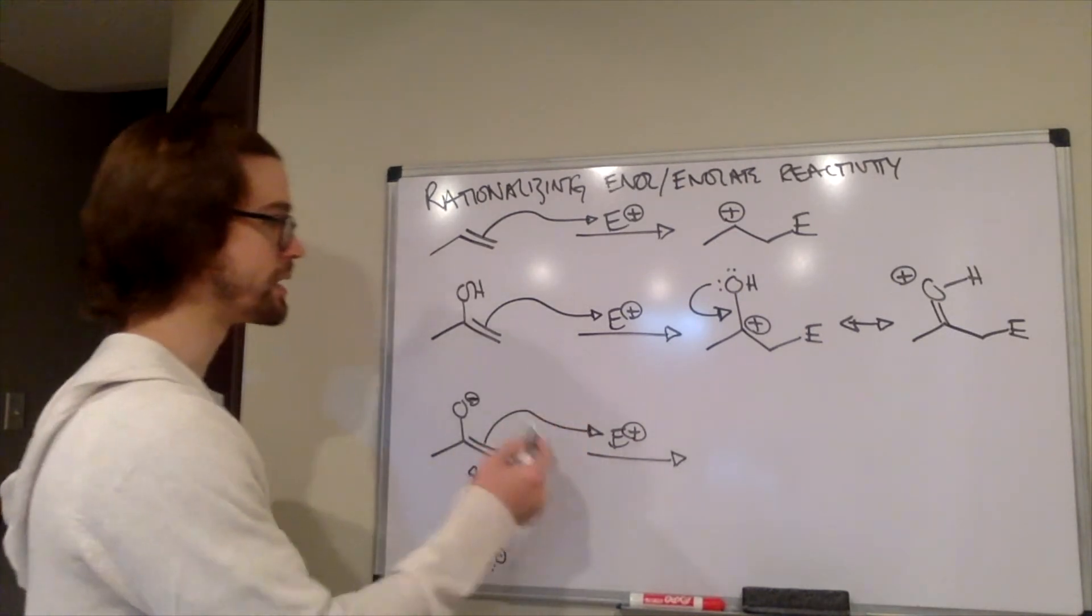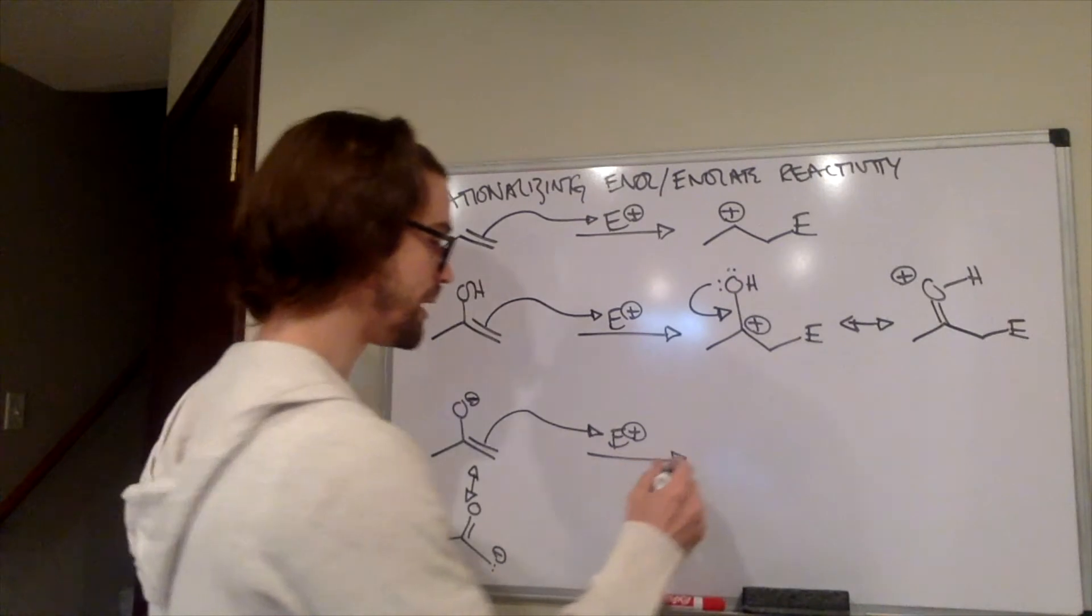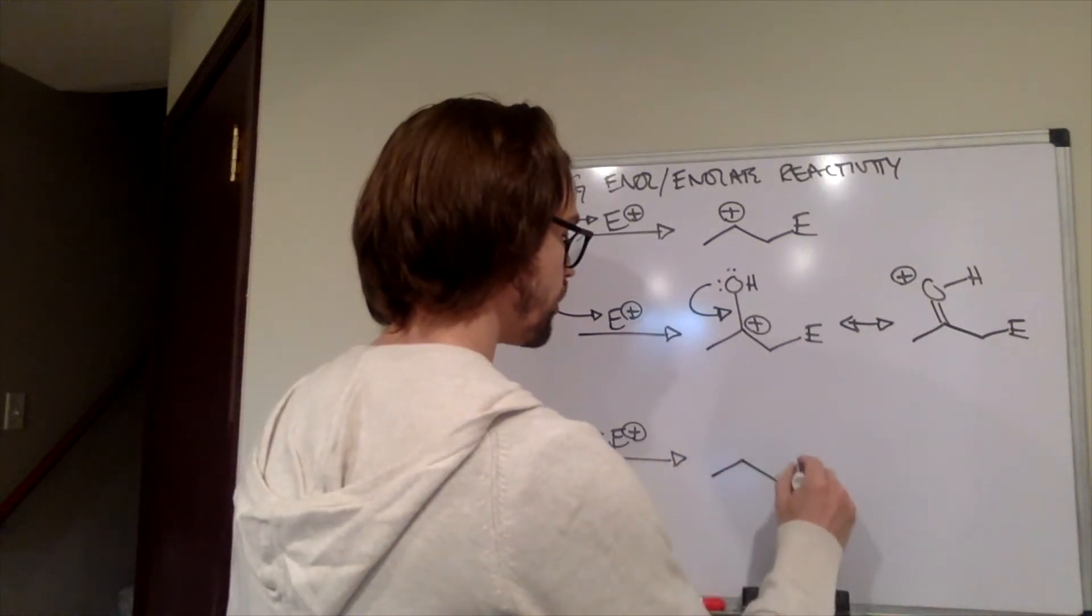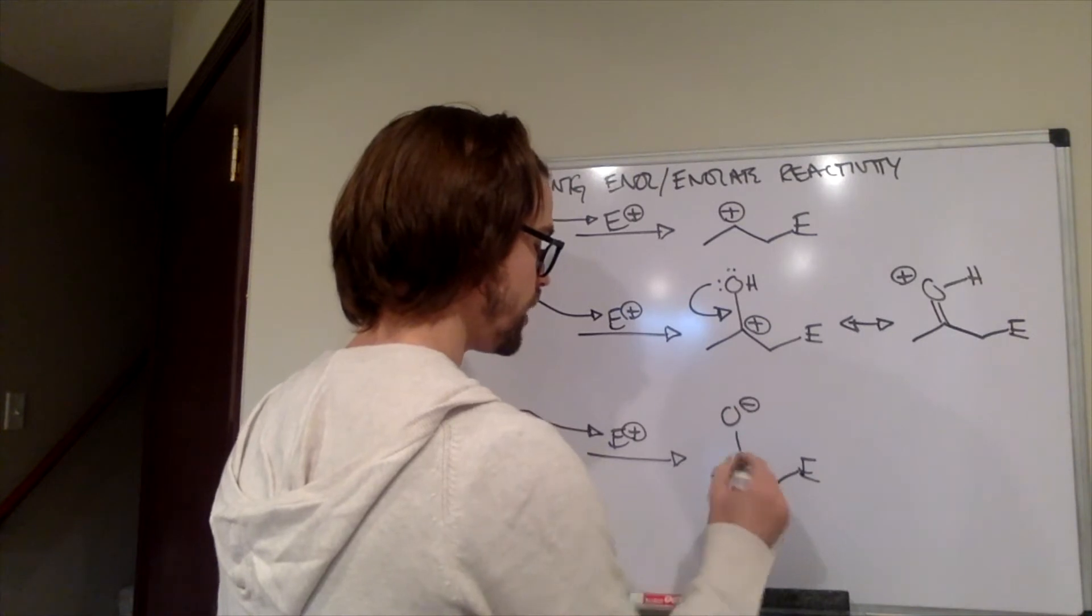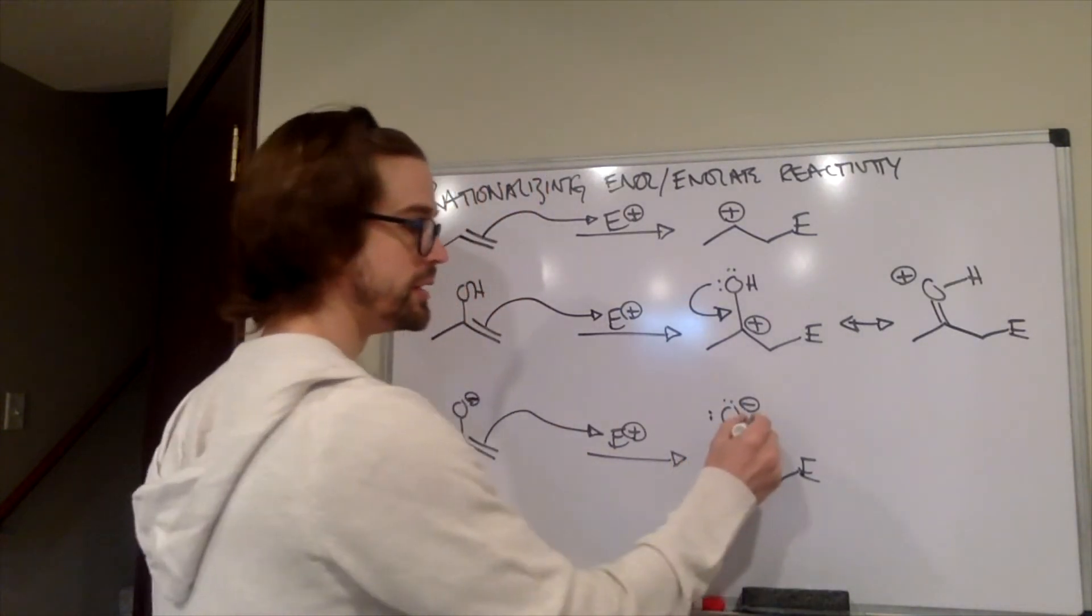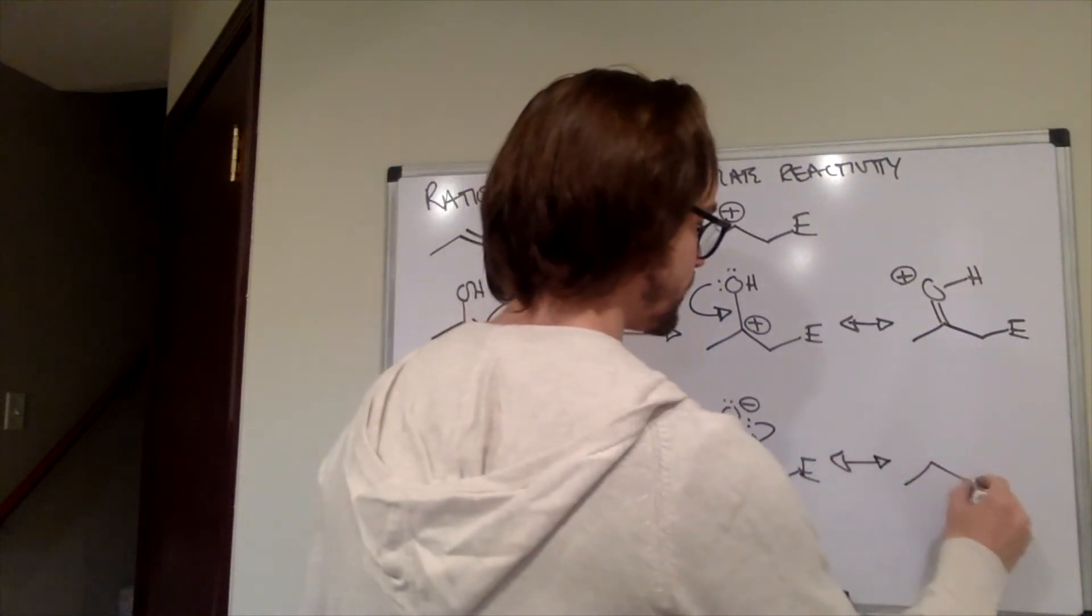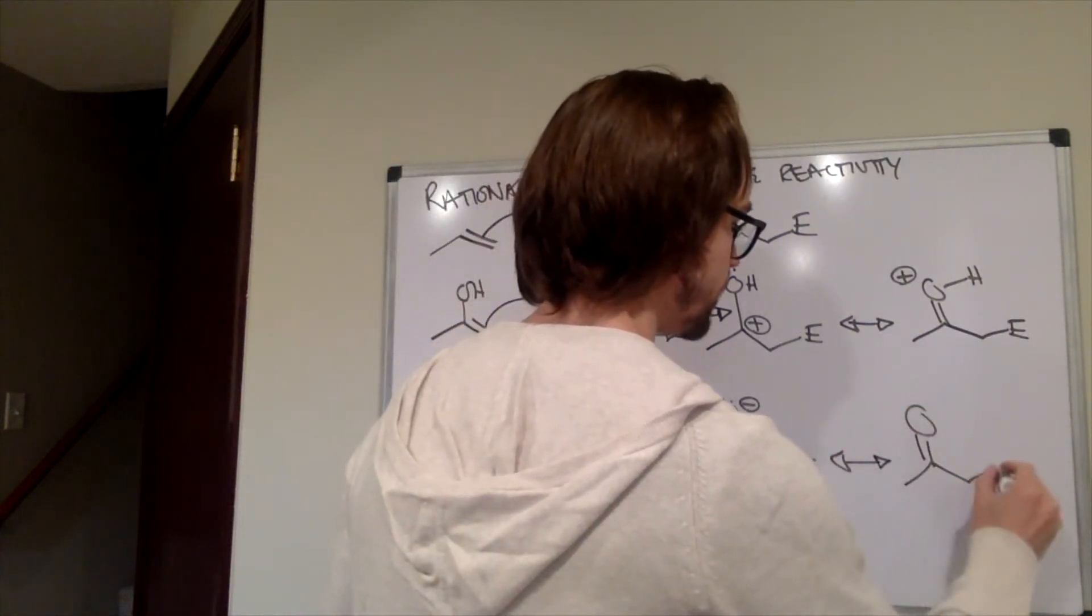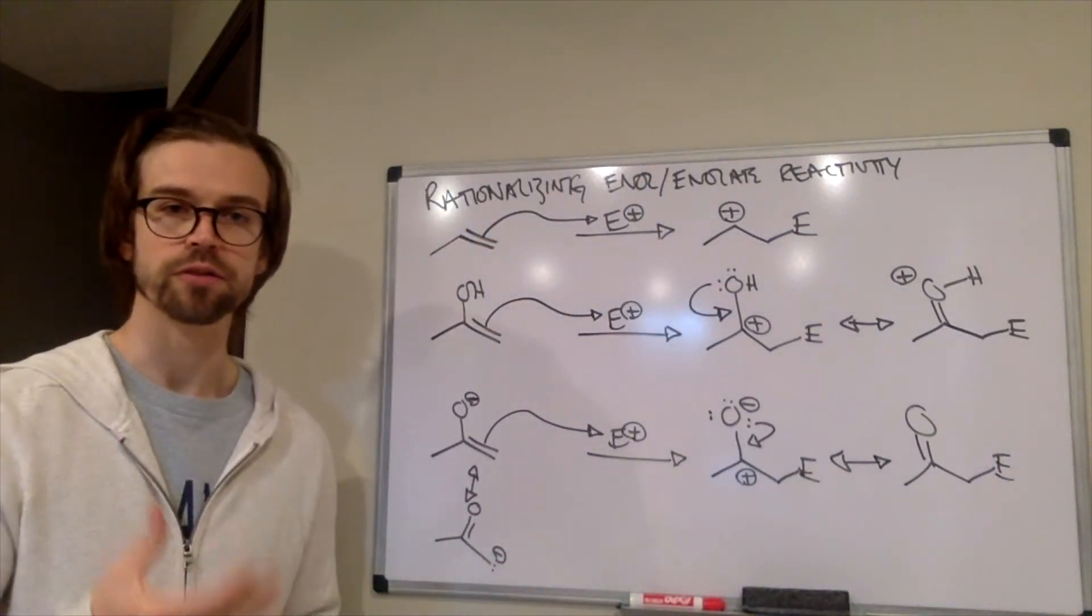So again, this reactivity follows the same trend that we've seen with alkenes, with enols. Enolates, it's the same situation, but we're going to add the electrophile here. And essentially, at this point, we already have a neutral species because we can just draw that other more prevalent resonance structure showing that the C-O π bond exists, and we've added that electrophile to the carbon.